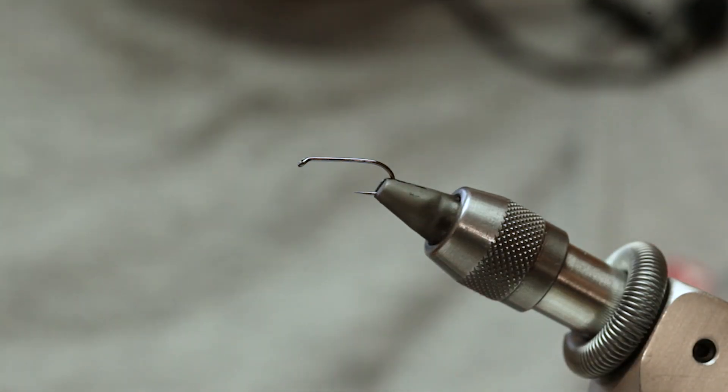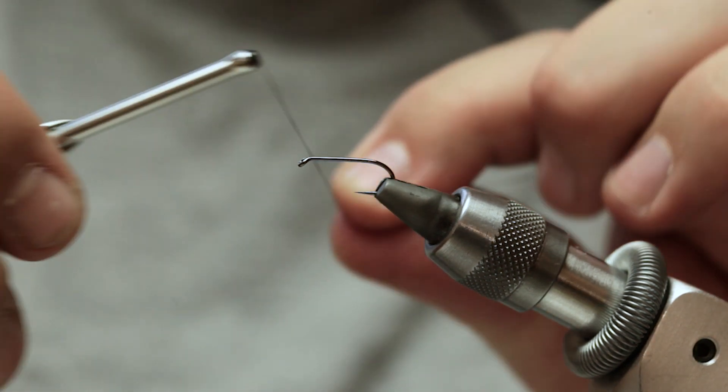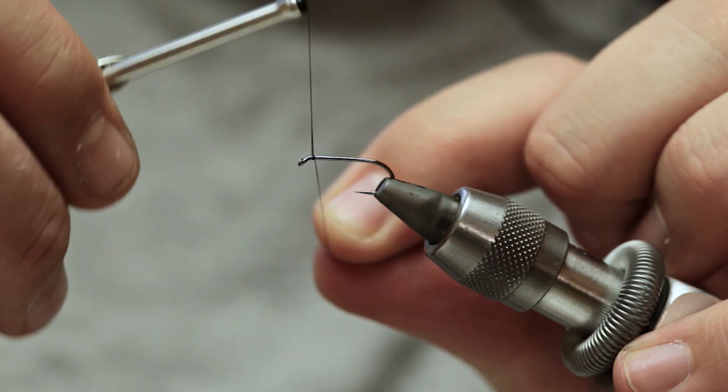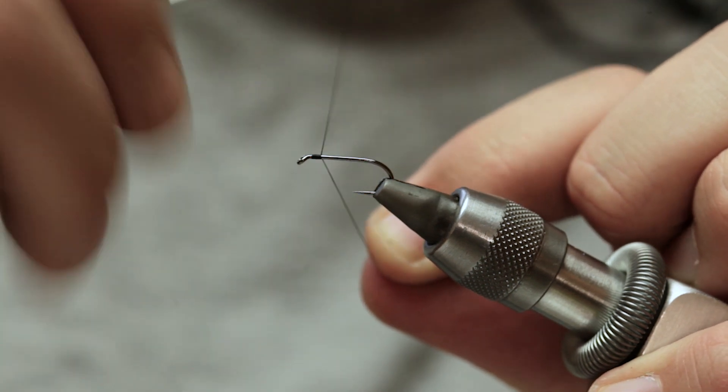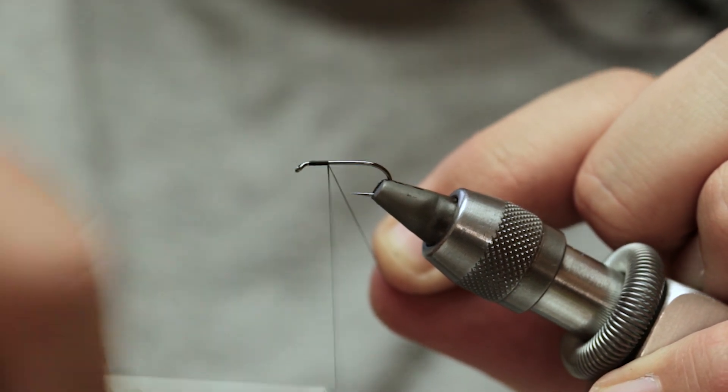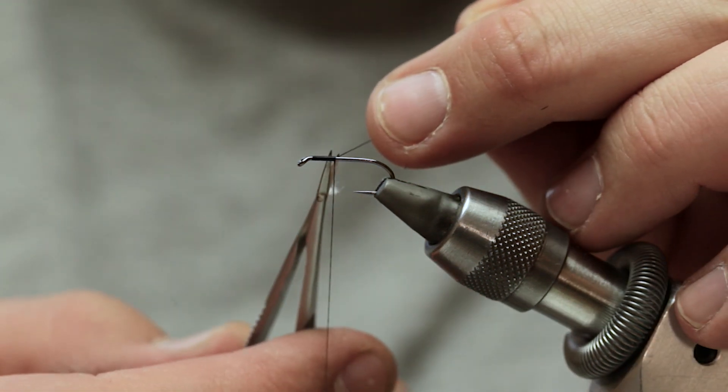So the hook we've got in the vise is a sproat wet size 10. You're going to catch on your thread a couple of millimeters from the eye, shaving a little bit of bulk at the end. Come halfway down.